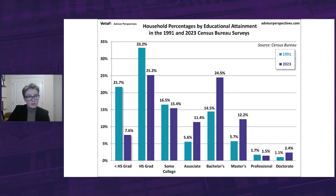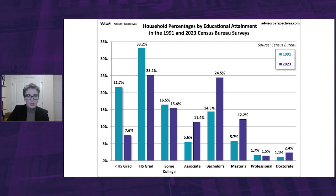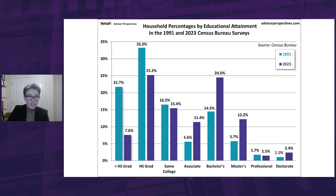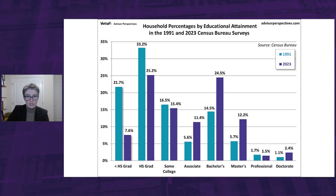Here are some of my takeaways. First, the number of householders with less than a high school degree has been cut by almost two-thirds. Second, the number of householders with bachelor's degrees has almost doubled. And third, the number of householders with associate's, master's, and doctorate degrees have more than doubled. Educational attainment has clearly advanced over the time frame of the Census Bureau series, and the income benefits are obvious.